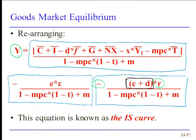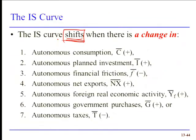Autonomous consumption, investment, government purchases, net exports, foreign economic activity, financial frictions, autonomous taxes. Seven, one, two, three, four, five, six, seven. Hey, how about that? Mustn't have been looking at this slide when I did the other one. So changes in any of these variables or any combination of these variables will cause the IS curve to shift.